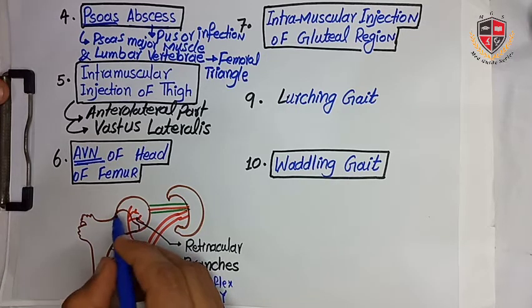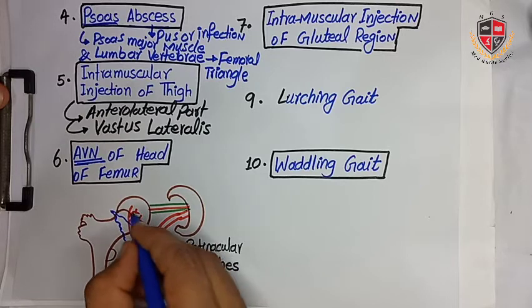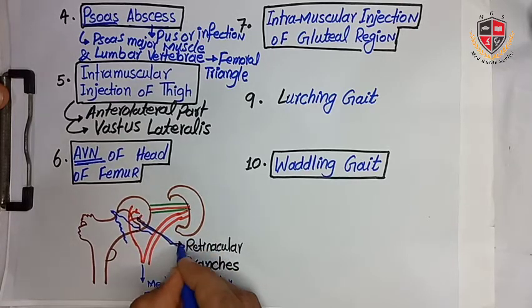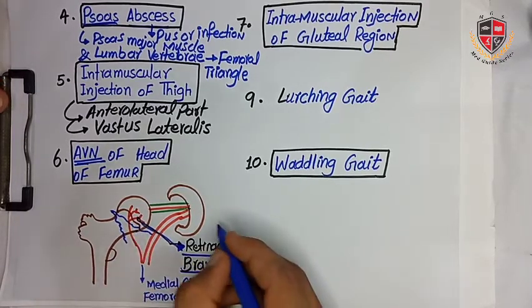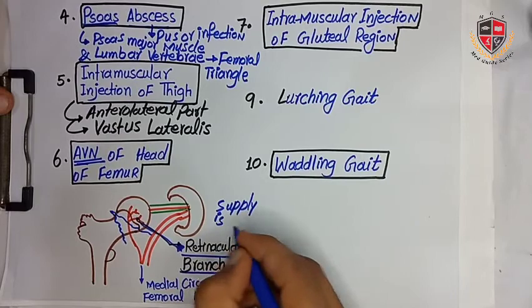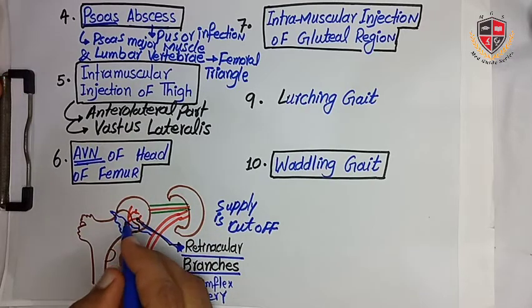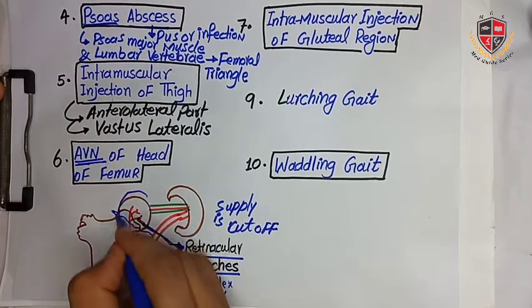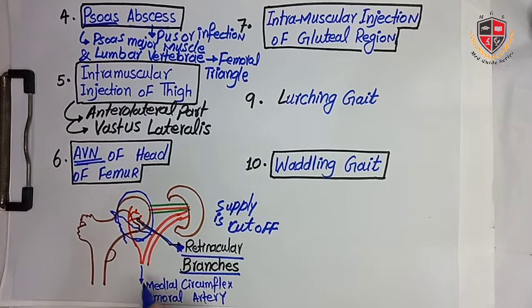The next clinical is avascular necrosis of the femur. Avascular necrosis occurs due to occlusion or cutting of any artery. Due to a fracture of the neck of the femur, the retinacular branches are cut off, and the blood supply to the head of the femur is interrupted, causing ischemia and avascular necrosis of the head of the femur. The retinacular branch is a branch of the medial circumflex femoral artery.